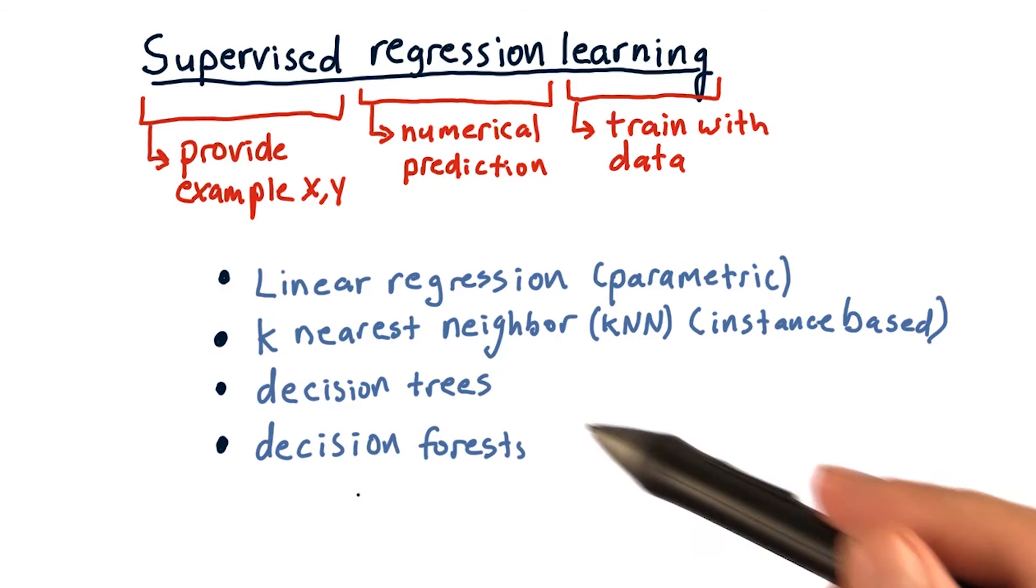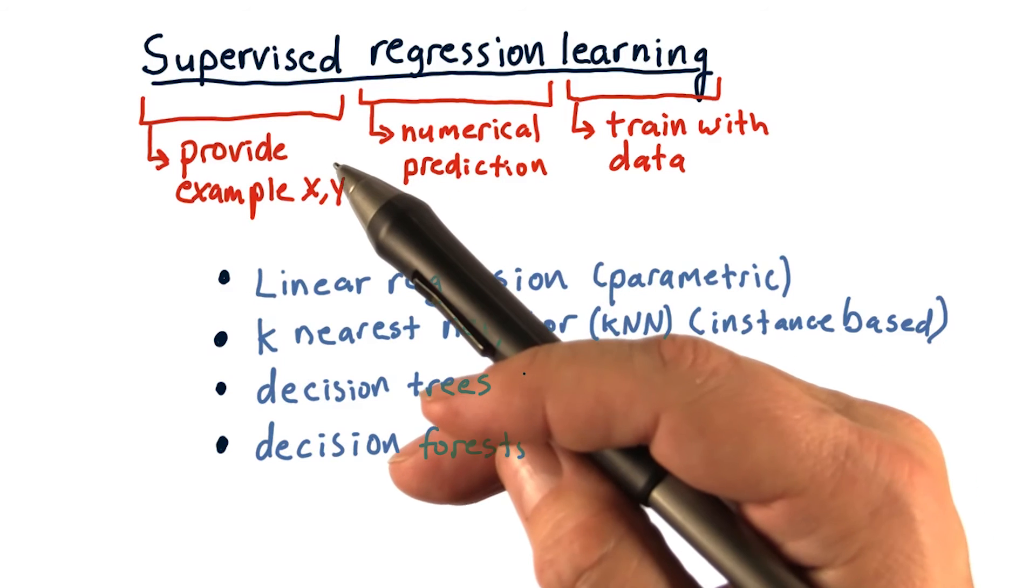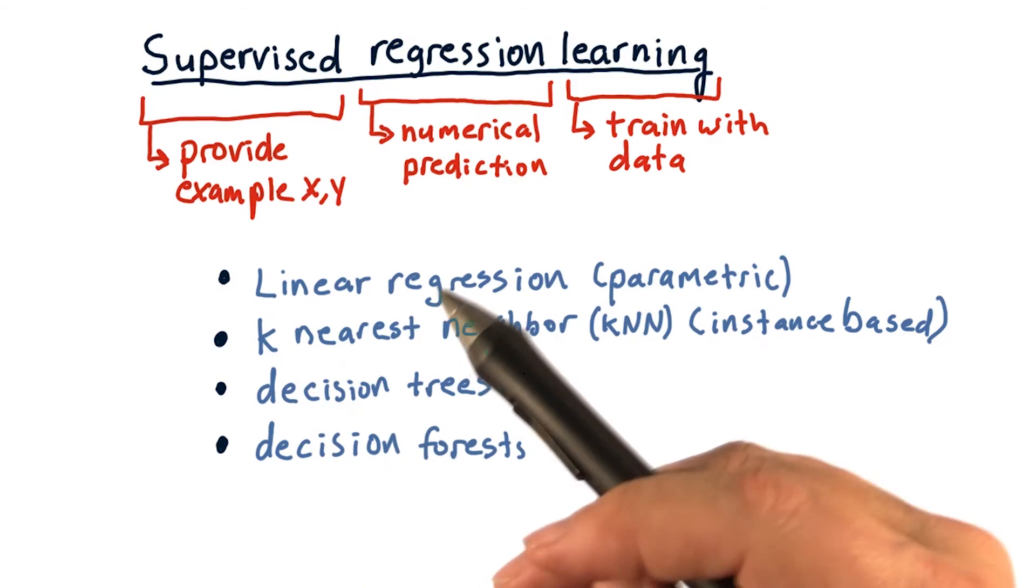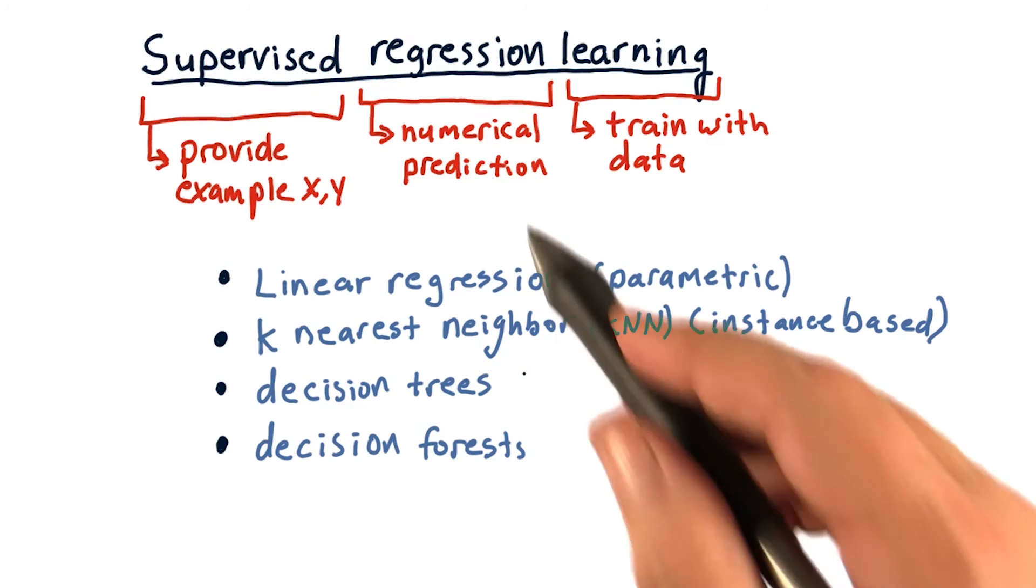As you might guess, the way decision trees work is they store a tree structure. And when a query comes in, it essentially bounces down that tree according to factors of the data. Each node in the tree represents essentially a question: Is this x value greater than or less than this other value? And eventually, we reach a leaf, and that is the regression value that's returned.